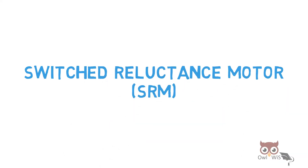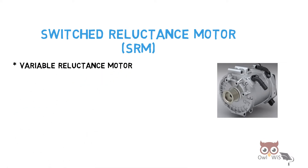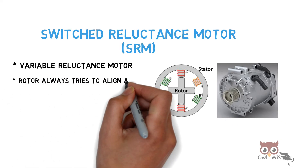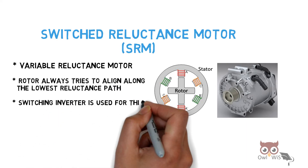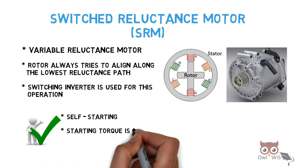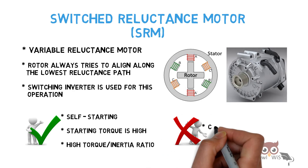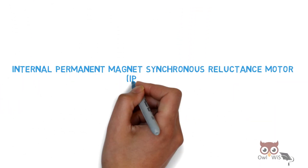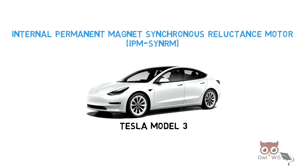Next, the switched reluctance motor, or SRM, also called the variable reluctance motor. The rotor always tries to align along the lowest reluctance path, and a switching inverter is used for this operation. The advantages are that it is self-starting, has high starting torque, and a high torque-to-inertia ratio. The disadvantages are complexity in control and high noise levels. A variant, the internal permanent magnet synchronous reluctance motor, is used in the Tesla Model 3.